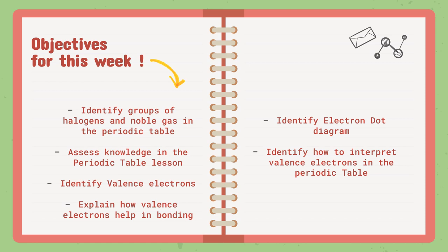We finished all the groups concerning the periodic table. We only have halogens and noble gases left. We will finish them this week. And then we are going to assess our knowledge in the periodic table lesson by solving the lesson check. By that, the second lesson would be done.